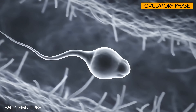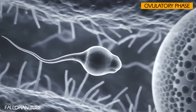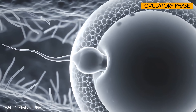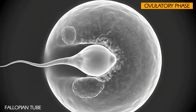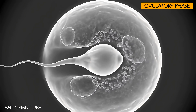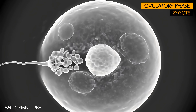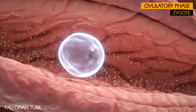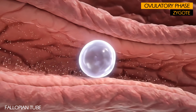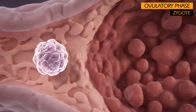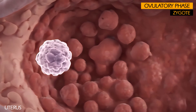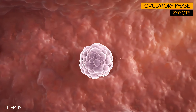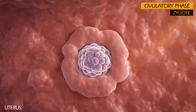The sperm searches for the egg to fertilize it at the ampulla of the fallopian tube, and the sperm's genetic material is released into the egg to form a zygote. Once fertilized, it will travel through the fallopian tube to the uterus, where the new zygote will find a suitable environment for implantation into the endometrium.